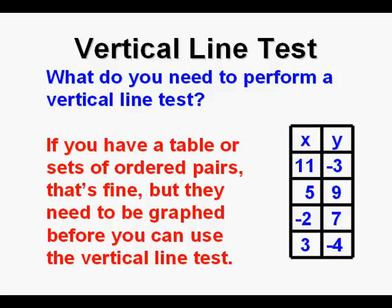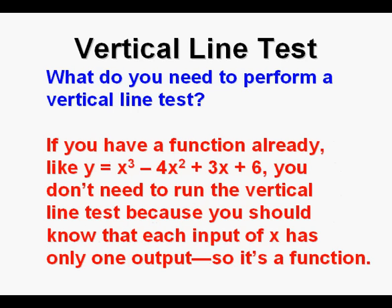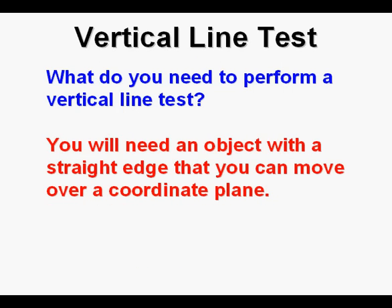If you have a function already, such as y equals x cubed minus 4x squared plus 3x plus 6, you don't need to run the vertical line test to determine if it's a function because you should know that each input of x has only one possible output, so therefore it's a function.